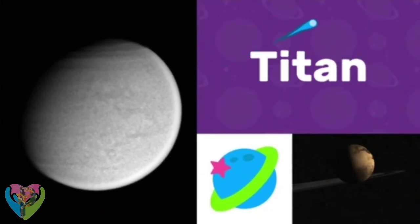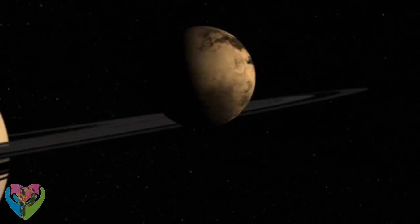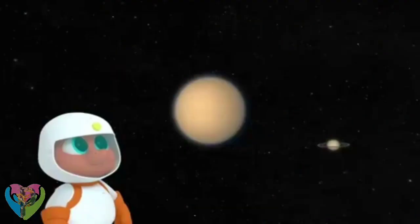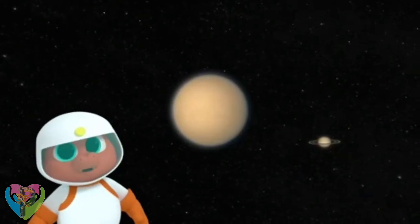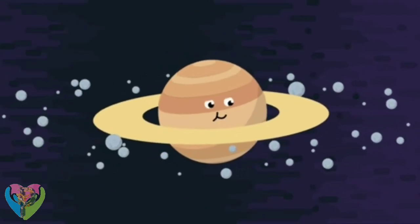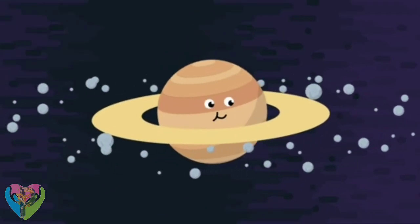Titan! Titan is one of the moons of Saturn. Saturn has a moon? It has over 50 moons, Corby. A moon is a natural object that goes around another object in space, usually a planet.